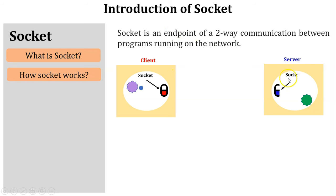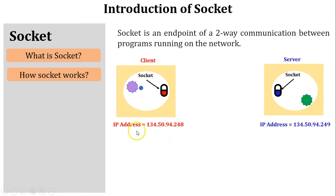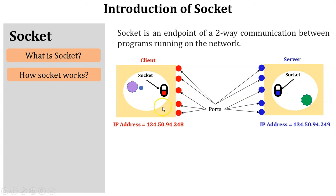This is the client-side socket and this is the server-side socket. The socket address is associated with the IP address as well as the port address. Here this is the client IP address and this one is the server IP address. IP address is a logical address in the network. These are the client-side ports and these are the server-side ports. The use of a port is for process-to-process communication in the network.